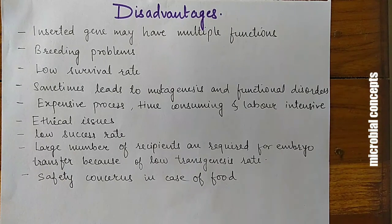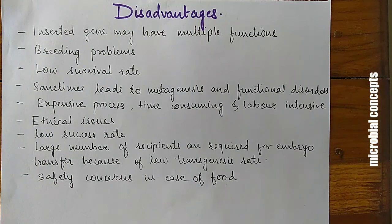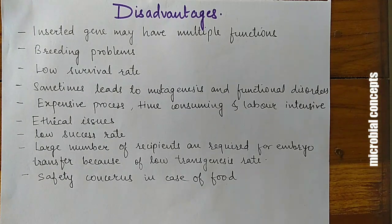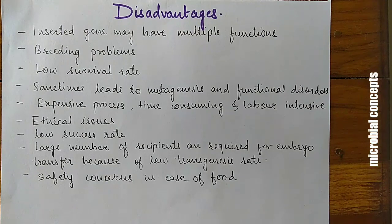Disadvantages include that the inserted gene may have multiple functions, breeding problems, low survival rate, possible mutagenesis and functional disorders, the process being expensive, time consuming and labour intensive, ethical issues related to use of plants and animals, low success rate, large numbers of recipients required for embryo transfer due to low transgenic rates, and safety concerns regarding food.